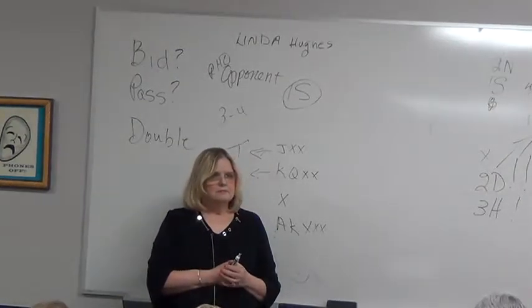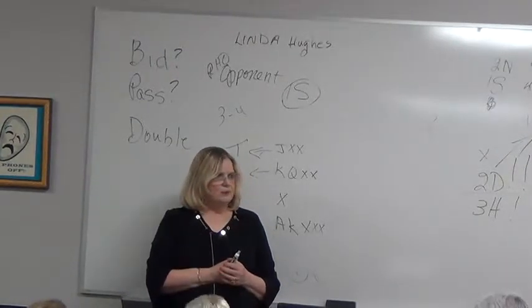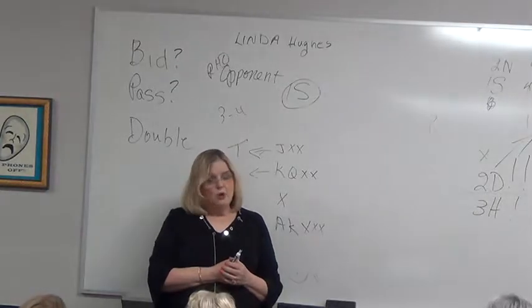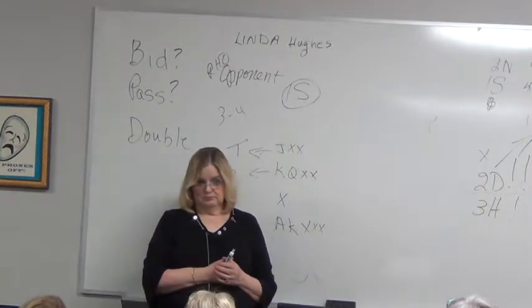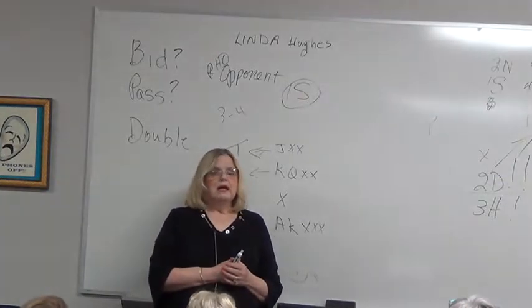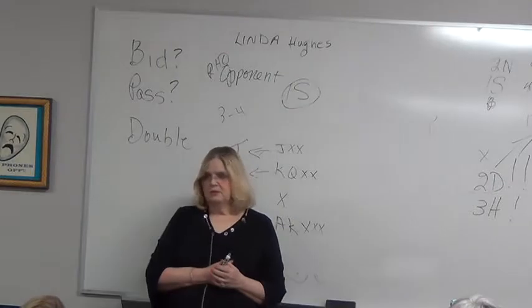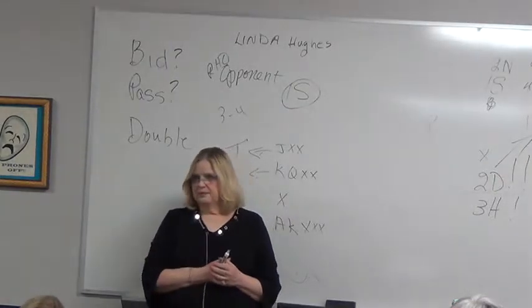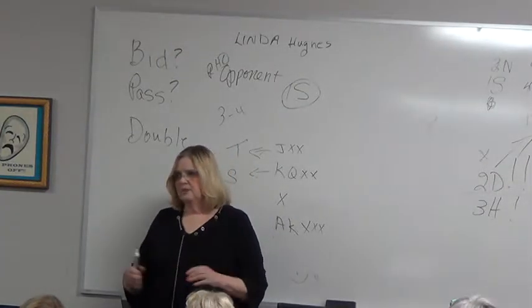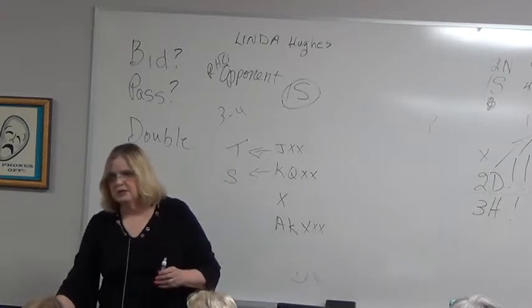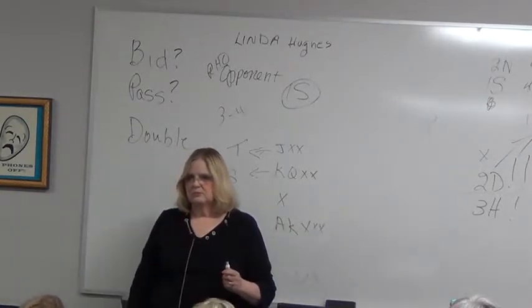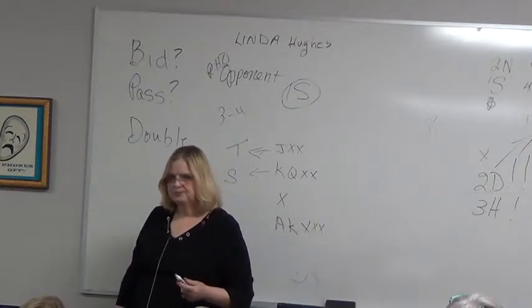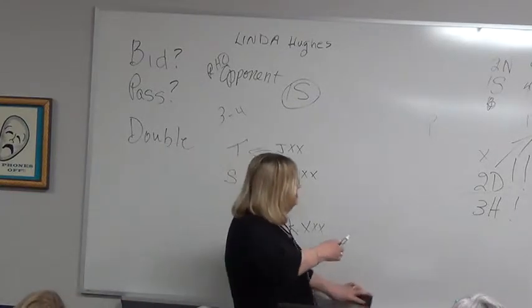And then you cuebid if you have the full opener. Because partner should have an opener for a takeout double, so you cuebid, and then the advancer has an opener. Advancer cuebids with an opener. And that's different cuebid than what you were showing up there. Yes. And how does that work?